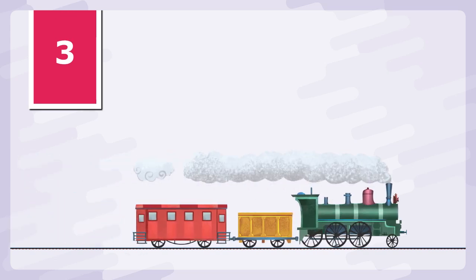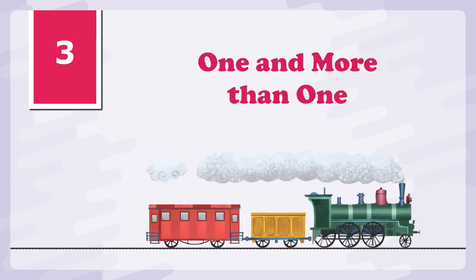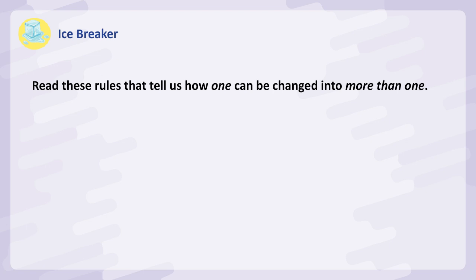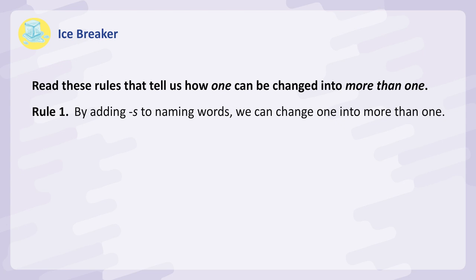Lesson 3: One and more than one. Icebreaker — read these rules that tell us how one can be changed into more than one. Rule 1: By adding S to naming words, we can change one into more than one.